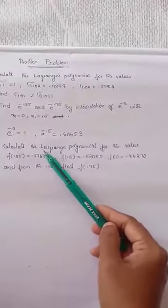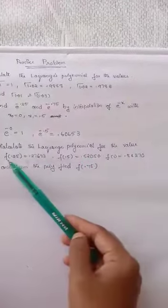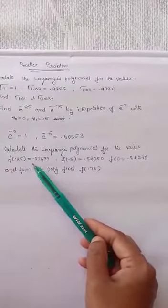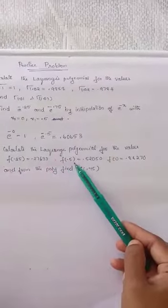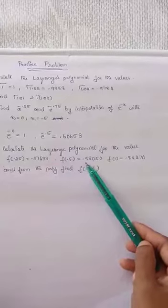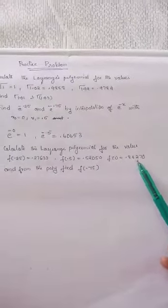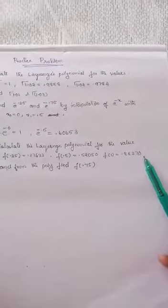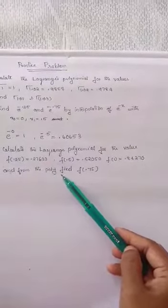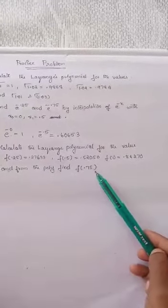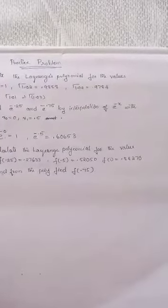Third problem: calculate the Lagrange's polynomial for the values f(0.25) equal to 0.27633, f(0.5) equal to 0.52050, and f(1) equal to 0.84270. From the polynomial, find f(0.75). Thank you.